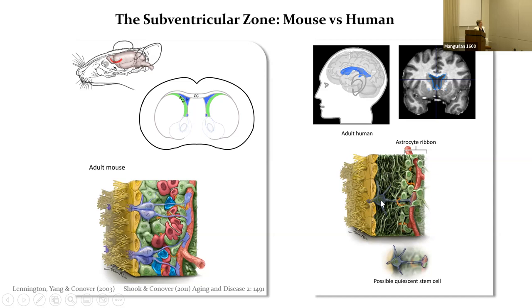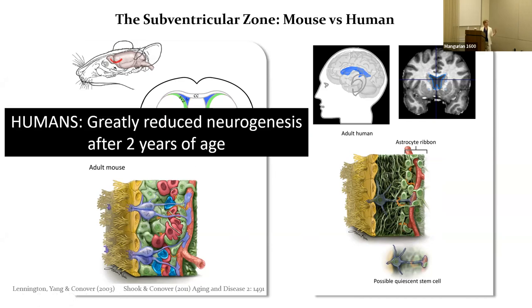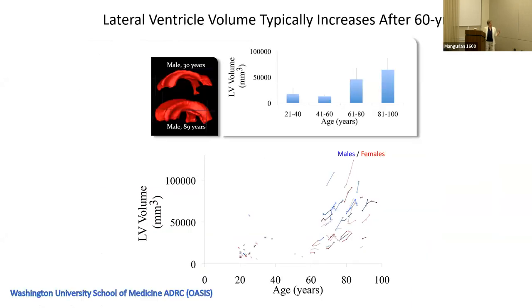In humans, neurogenesis stops pretty much after the age of two. You have this astrocytic ribbon and a gap region full of astrocyte processes, plus a barrier layer. What I've depicted here is a potential quiescent stem cell, because it's not really clear if stem cells are retained through adulthood in humans. So one of our early questions was: what happens if there are no stem cells?